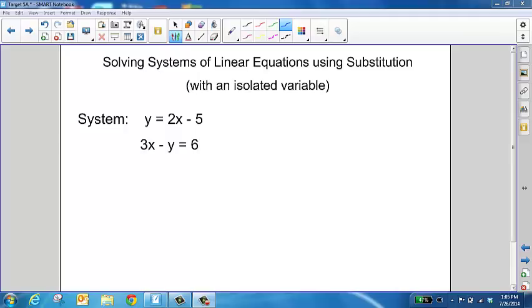Now looking at the system on the screen, there's two equations: y equals 2x minus 5, and 3x minus y equals 6. This first equation here has an isolated variable because that y is all alone on one side of the equal sign.